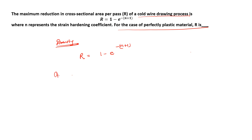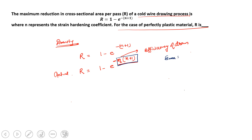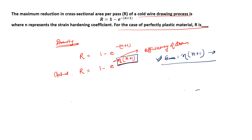The actual formula is r = 1 - e^(-eta*(n+1)), where eta is the efficiency of drawing. This value tells you the maximum strain while drawing. One numerical was also asked in GATE regarding this formula. This formula tells you about the reduction per pass.